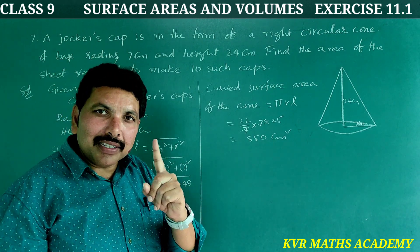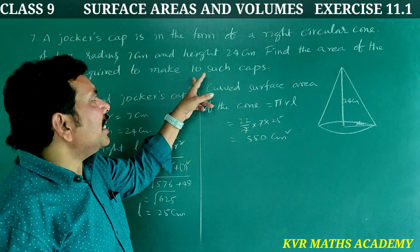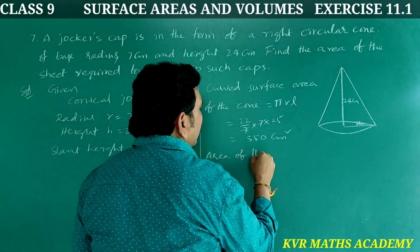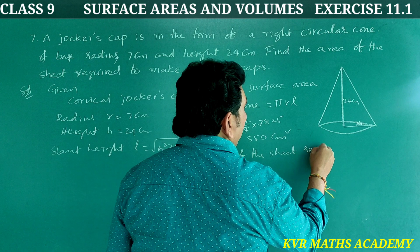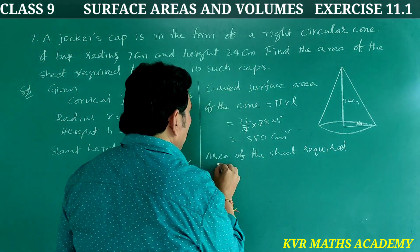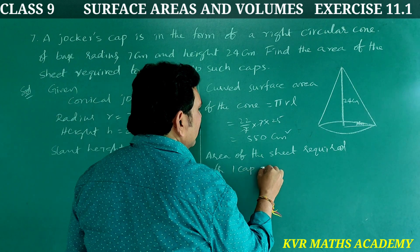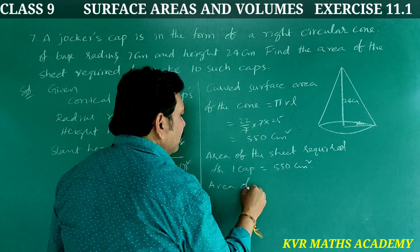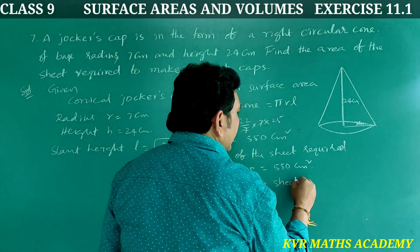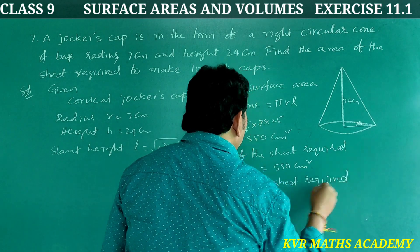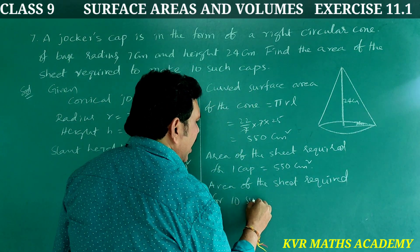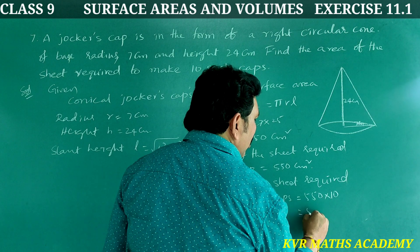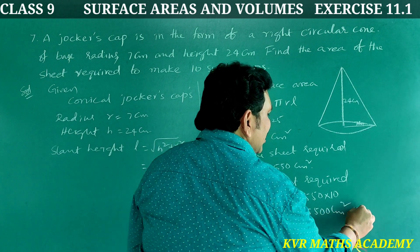The area of the sheet required to make one such cap is equal to 550 cm². For ten such caps: area of sheet required for 10 caps is equal to 550 into 10, that is equal to 5500 cm². Have you understood clearly?